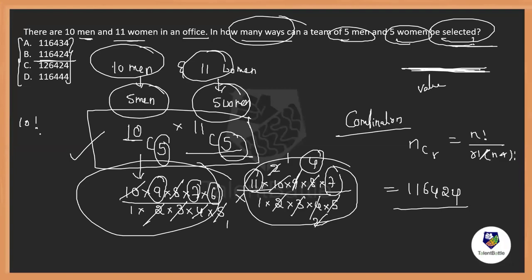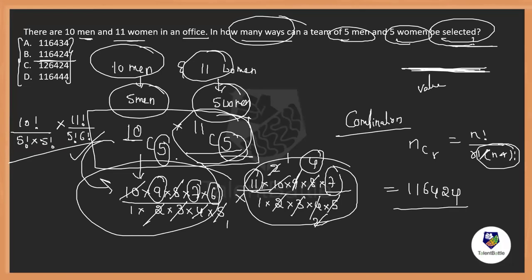The shortcut is: if r = 5, write 5 numbers in reverse from n and divide by 5 factorial. For 11C5, write 5 numbers from 11 in reverse and divide by 5 factorial. After cancellation, the remaining values multiply to give 116424. So the answer is 116424 — you need to type this value. It is a direct selection question: choosing 5 from 10 men and 5 from 11 women.